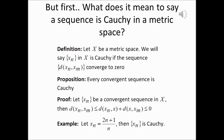By the triangle inequality, the ordinary distance between the n-th term and the m-th term is going to be less than or equal to the ordinary distance between the n-th term and x, plus the ordinary distance between x and the m-th term. Because the sequence converges to x...